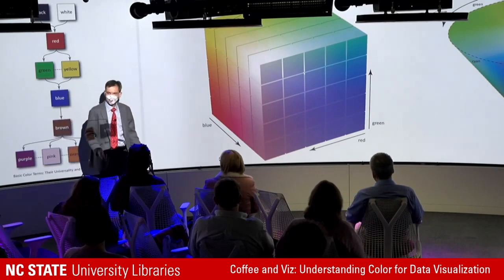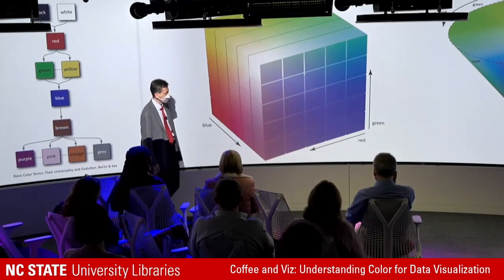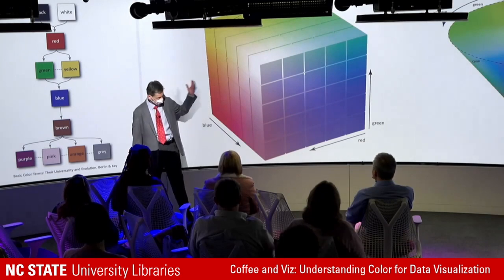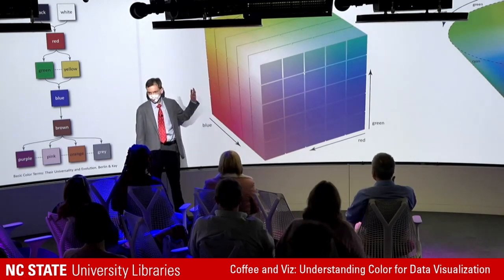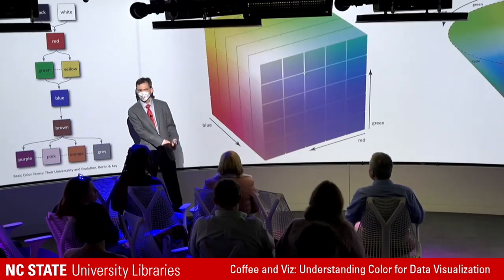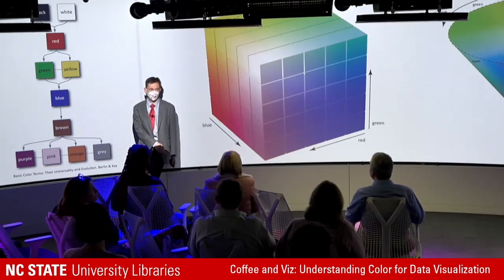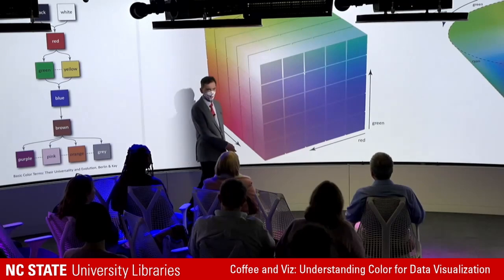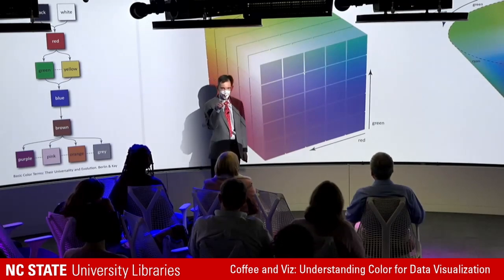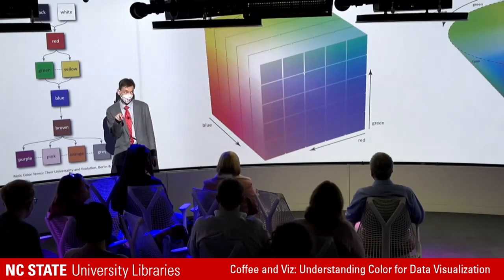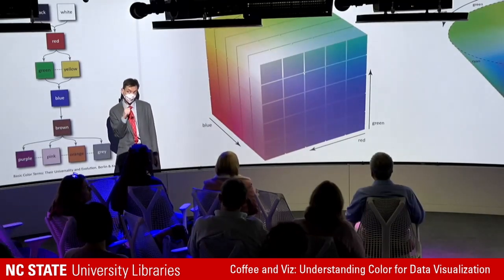The problem with RGB is that it's not an intuitive model. If I asked you what triple to give for red, green, or blue — that's easy. But what about orange? I don't know either. I'd go to a color picker, pick the orange I want, and read off the RGB. It's just not intuitive.